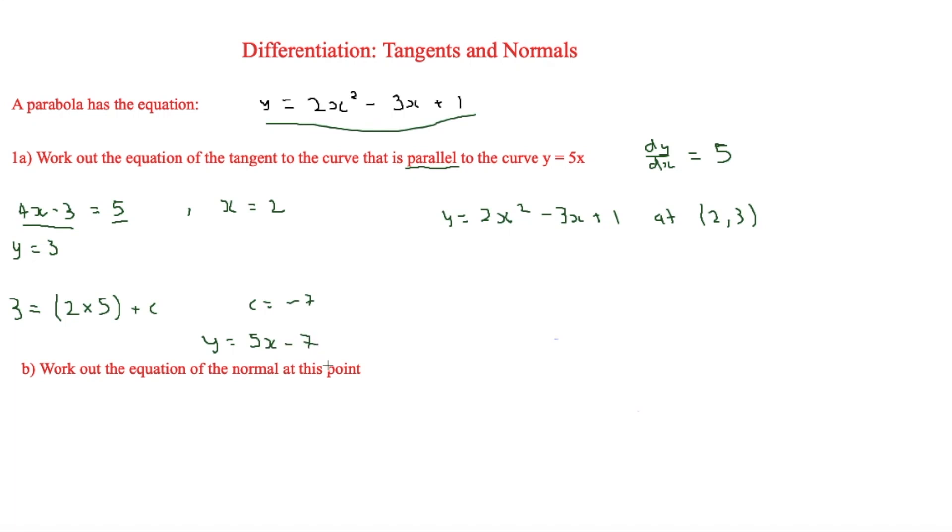So when we're looking at the normal then, this is where the negative reciprocal idea comes in. So to work out the gradient, which you always start with - always work out the gradient first - you can take the reciprocal, which is 1 over 5. Take the negative reciprocal, which is minus 1 over 5.